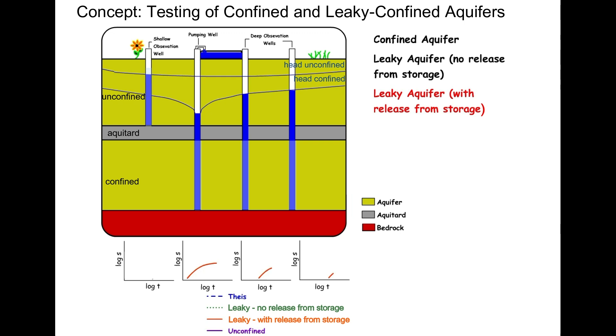This time-varying drawdown is shown by the orange line on the drawdown graphs, with dashed blue and green lines for comparison to the fully confined case and the case with no aquitard storage.